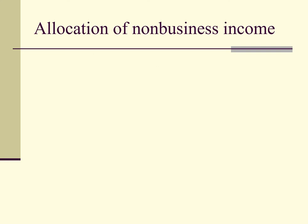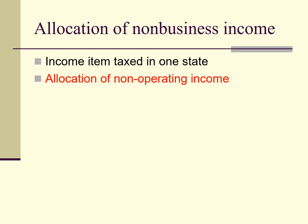Let's begin by looking briefly at the allocation of non-business income. To allocate income means that a specific item of income is taxed only to one state — that is, the income is not apportioned among the several states in which the company does business, but instead the business is taxed on that income in the state to which the income relates. In general, non-business income or non-operating income is allocated to states. Such income includes rents from realty or tangible personal property, capital gains, interest, dividends, and patent or copyright royalties.